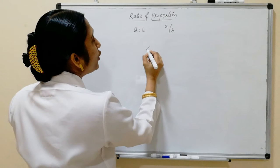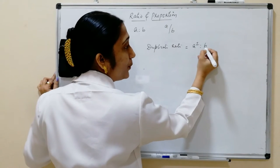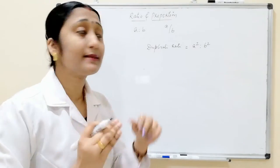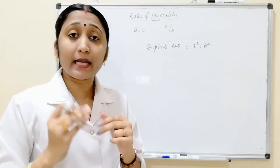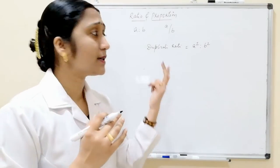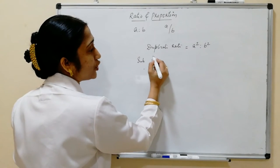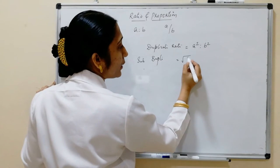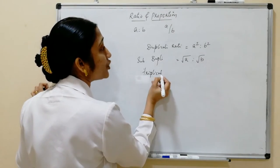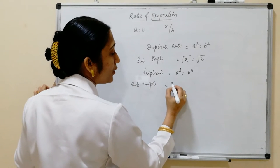If A is to B is a ratio, the duplicate ratio is A² is to B². The sub-duplicate ratio is √A is to √B. The triplicate ratio is A³ is to B³. The sub-triplicate ratio is the cube root of A is to cube root of B.